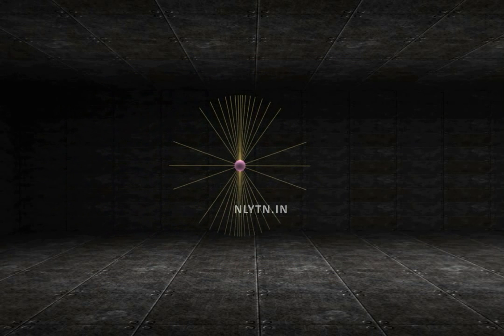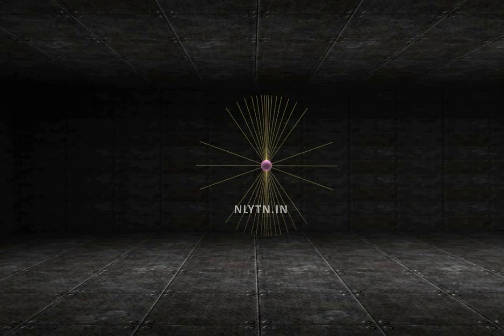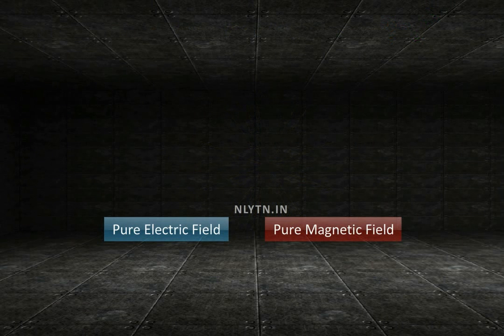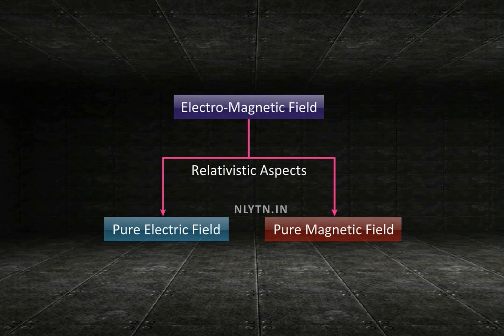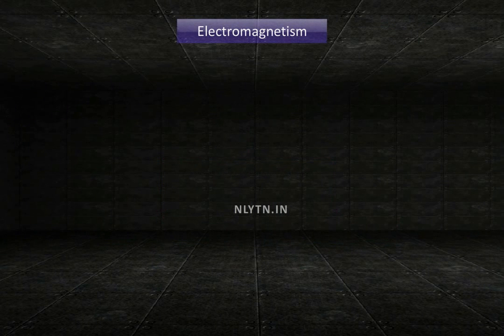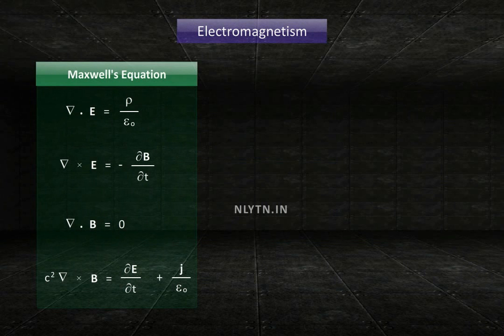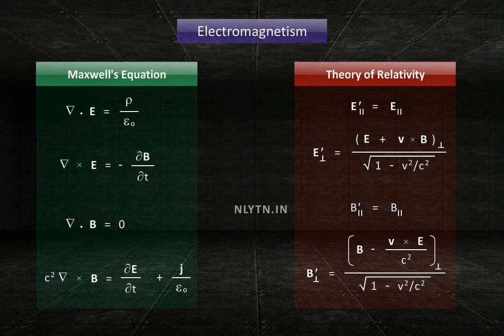So, is electric field also a relativistic phenomenon? Yes, it is. In fact, both electric and magnetic fields are relativistic aspects of an electromagnetic field. In order to understand electromagnetism, we will need an in-depth understanding of Maxwell's equations in the special theory of relativity.